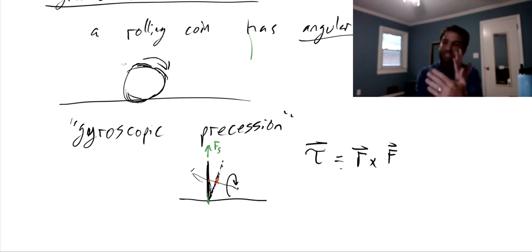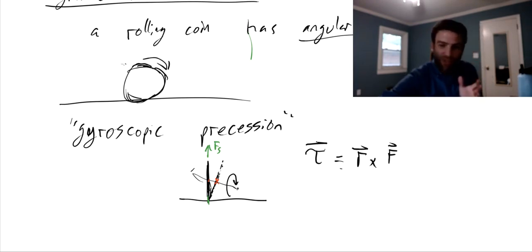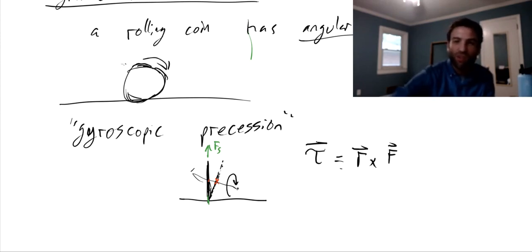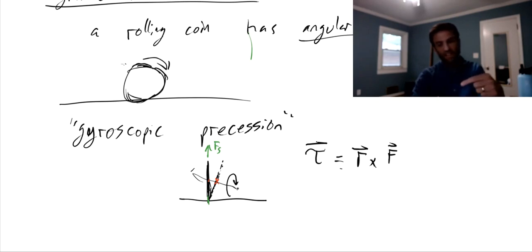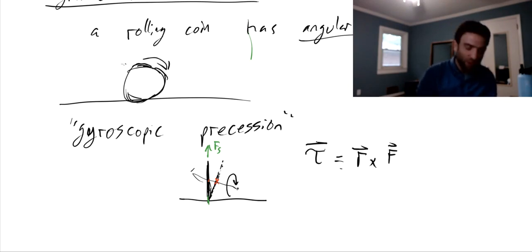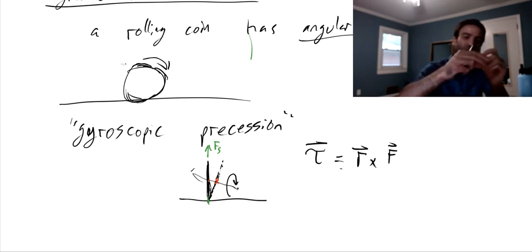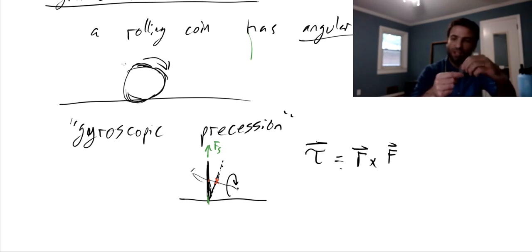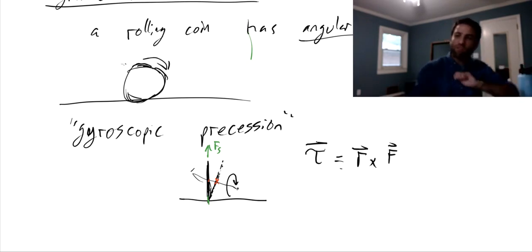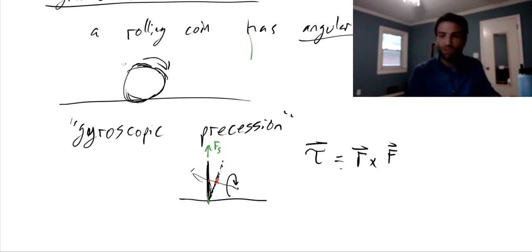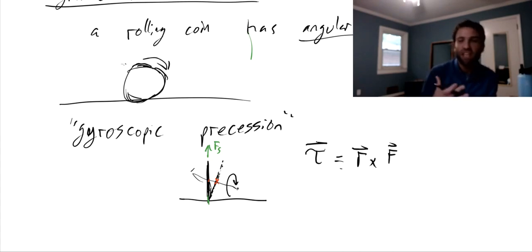Because of that torque, the coin starts to steer - it starts to turn. So the coin leans, but then it also turns because of this torque, and that kind of turning is called precessing. As the coin rolls in some direction, if it starts to lean, the torque acting on it will turn it in the same direction that it's leaning. As long as the coin is rolling fast enough, when it starts to lean, it'll start to turn in that direction, and the coin's velocity will take it so that the bottom of the coin gets itself back underneath the center of mass. By turning in the direction you're falling, as long as you move forward fast enough, you bring yourself back over the center of mass.